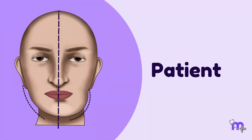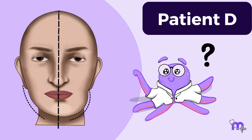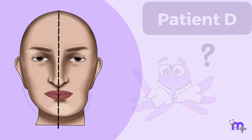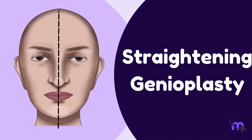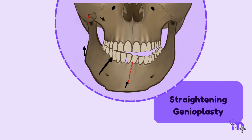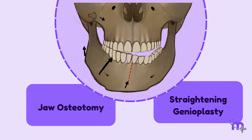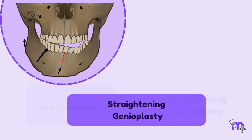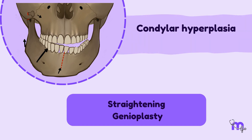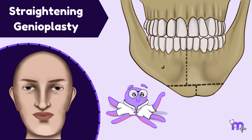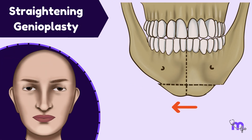Finally, we come to patient D. This asymmetry can be treated with straightening genioplasty. This procedure is recommended for patients with facial asymmetry, particularly when full correction cannot be attained through jaw osteotomies alone. These asymmetries can be seen in cases of condylar hyperplasia or TMJ ankylosis, and straightening genioplasty is used to correct the facial asymmetry seen in relation to these pathologies.